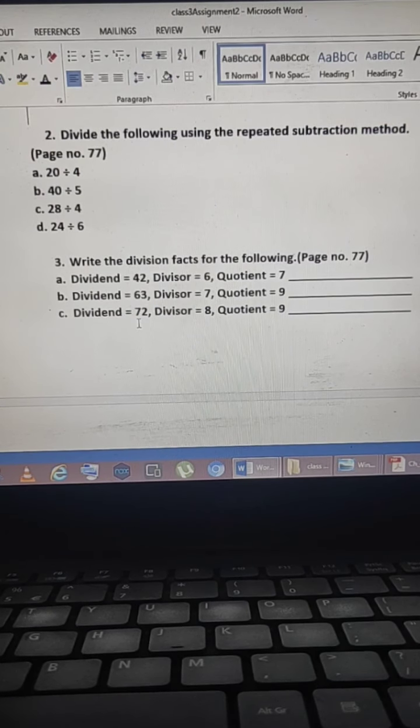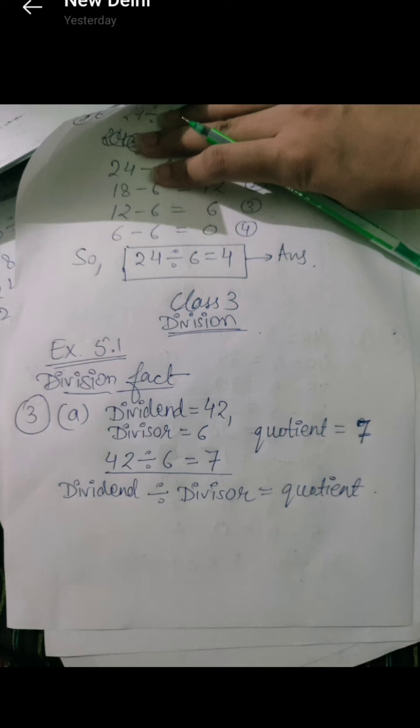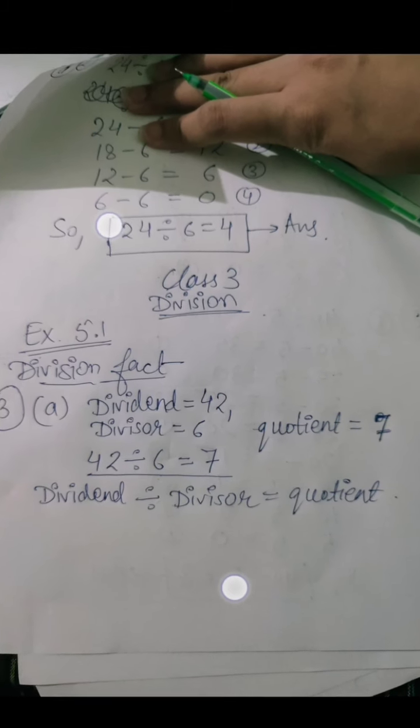Now we will write that. I am doing part A for you and other two parts, B and C, you will do by yourself. Now question is, dividend has given 42, division has given 7 and quotient has given 6.